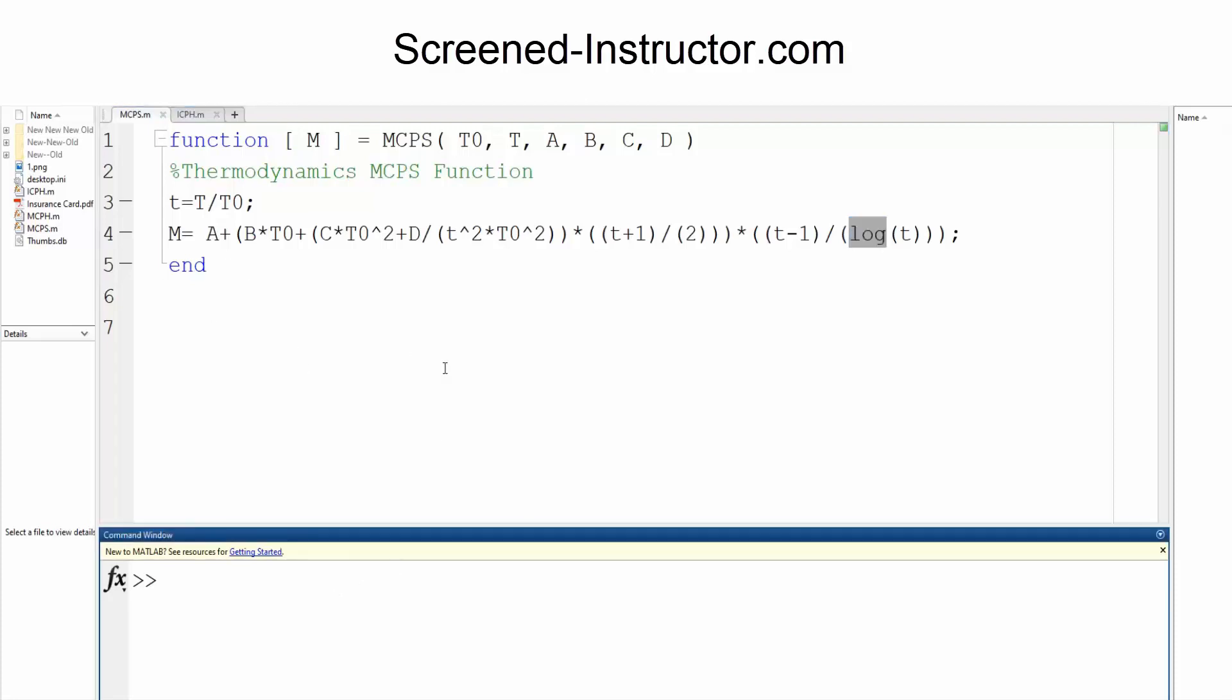Now if I want to, I can write down a sample problem to solve. I can say MCPS parenthesis. I can say that this is T naught, this is T, this is A, this is B, this is C, and finally this is D.